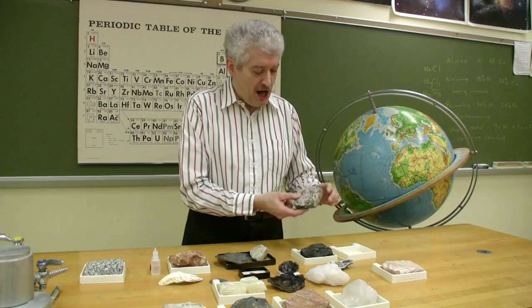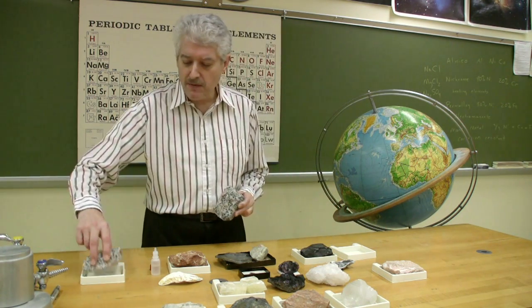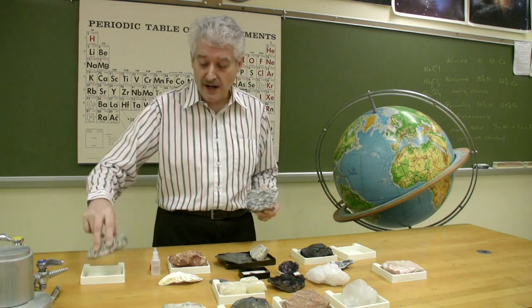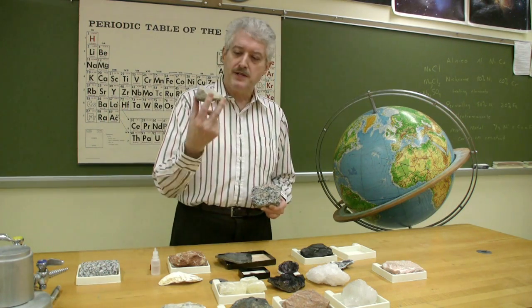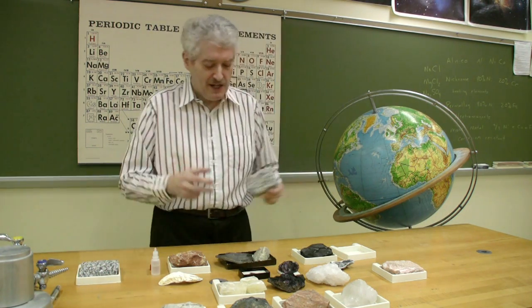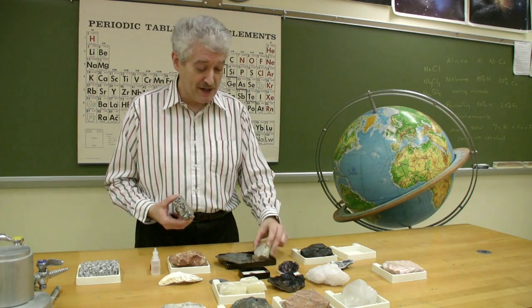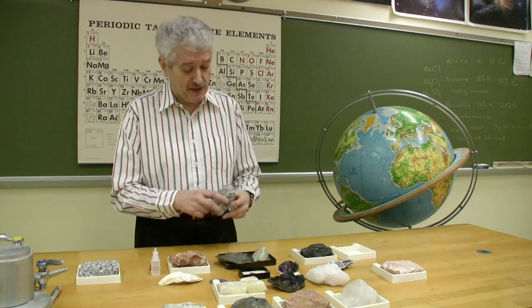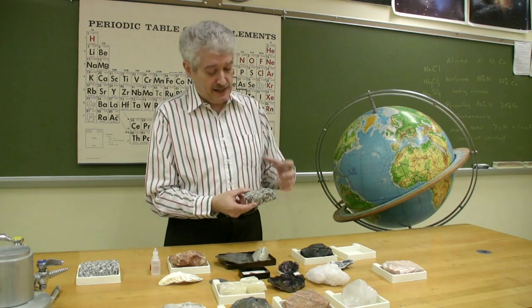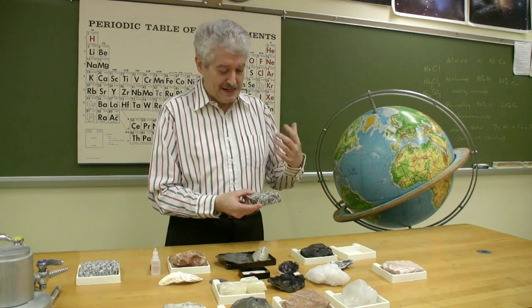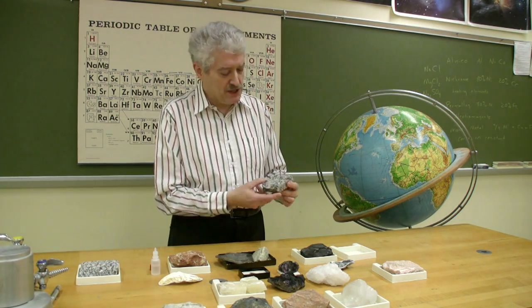In geology, we call igneous rocks and metamorphic rocks collectively hard rocks, and we call sedimentary rocks soft rocks. That's not to imply that if I hit you on the head with a sedimentary rock it's going to feel soft. It simply means that you have a denser, more compact form in the igneous and metamorphic rocks.